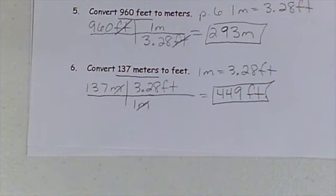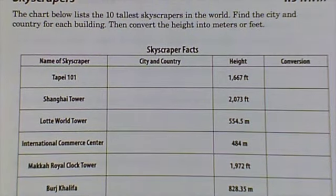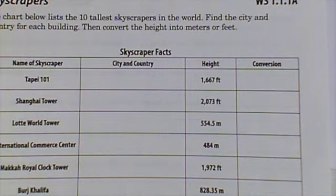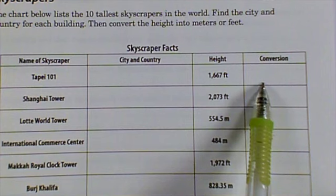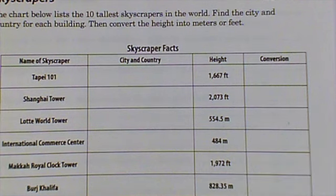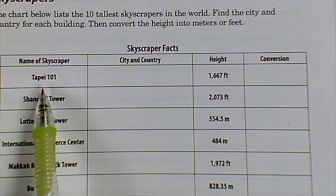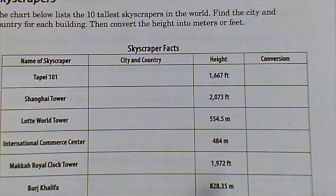Now I want you to use that information to do this worksheet: Worksheet 1.1.1A Skyscrapers. You're going to do the conversion column just the way we did it. If it's in feet, you're going to convert it to meters. If it's in meters, you're going to convert to feet. When you're doing your conversions, I want you to have an extra sheet of notebook paper that you're showing me your work for the conversions. You can simply abbreviate these like Taipei 101, just put T101, Shanghai Tower ST, so I know which one you're converting and do the conversions.